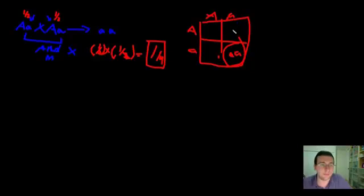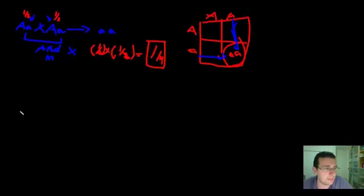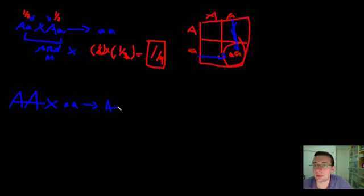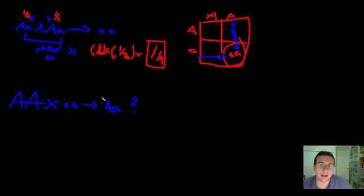Without doing a Punnett square, you can figure that out. Now let's try another one. You have a parent that is big A, big A and a parent that is little a, little a. What are the chances of making a child that is heterozygous? That one will be a little more complicated, and we're going to come back to it after we do our OR problem. Keep that in mind.